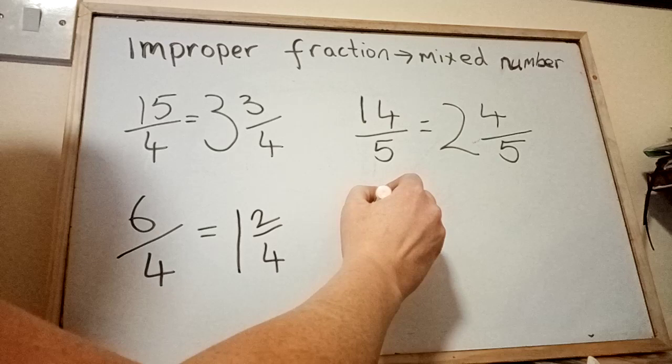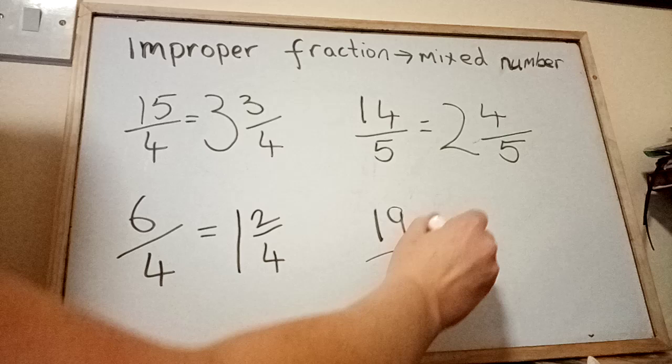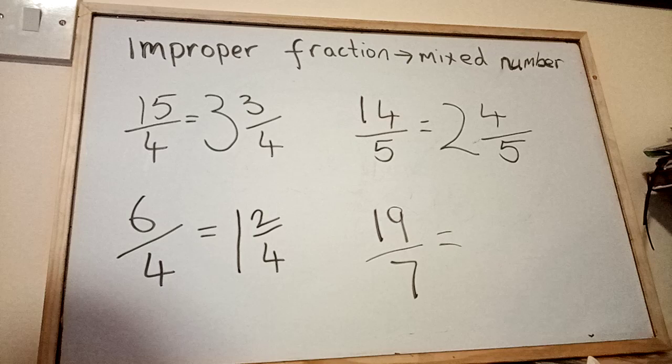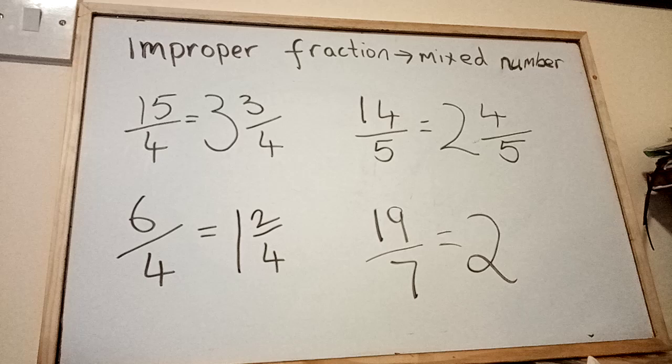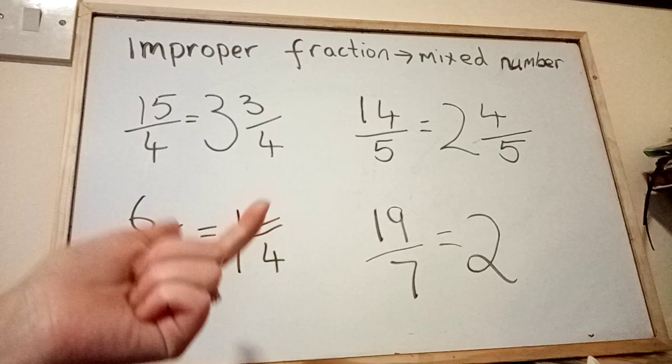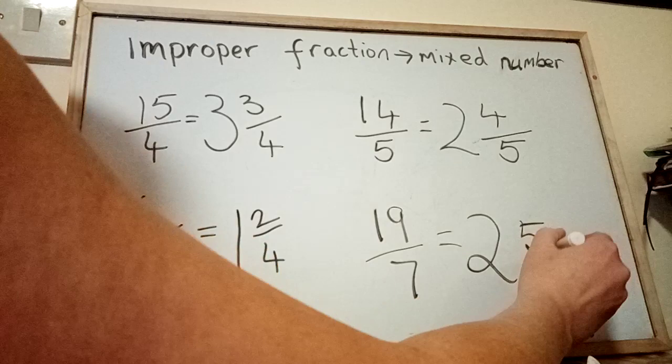Next one we'll do is 19 over 7. So how many times does 19 divide into 7... or sorry, 7 divide into 19? So 7, 14, 21... 14 is going to be the closest. 7 times 2 is 14. What's the difference between 14 up to 19? You can count with your hand if you want: 14, 15, 16, 17, 18, 19. So it's 5. So our remainder is 5, and we're talking about sevenths, so it's 2 and 5 sevenths.